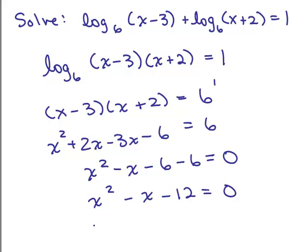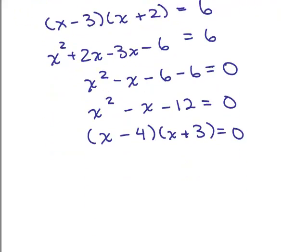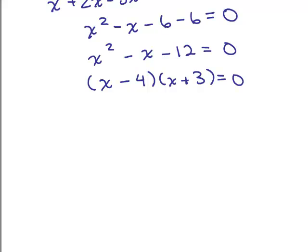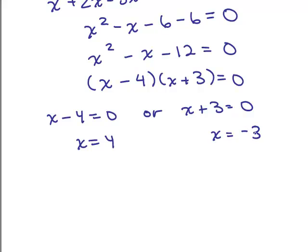So when you have a quadratic equation, hopefully you can factor it, that's the easiest way to do it. So let's go ahead and factor x minus 4 times x plus 3 equals 0, and then we can set each of these factors equal to 0, so we have x equals 4 or x equals negative 3.